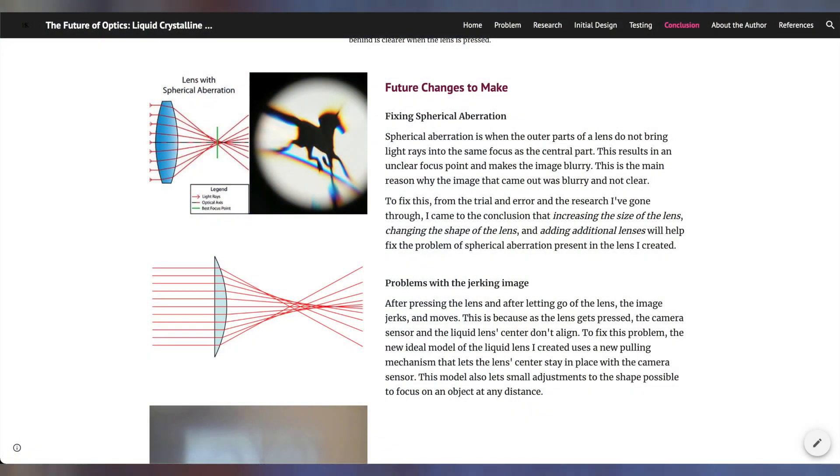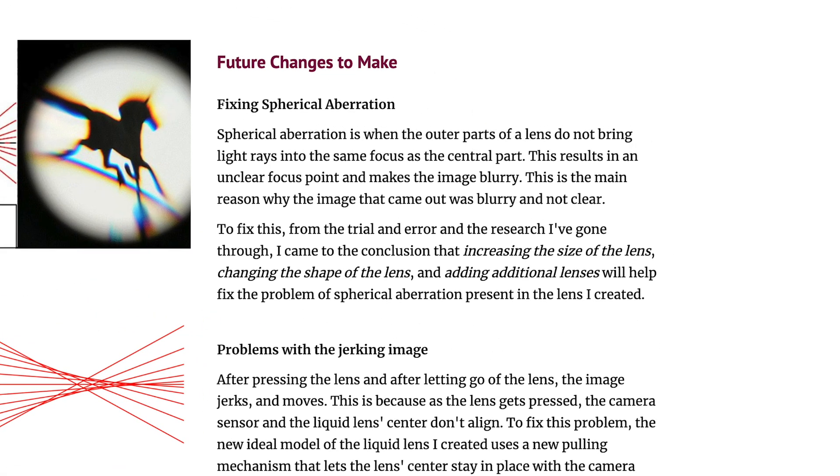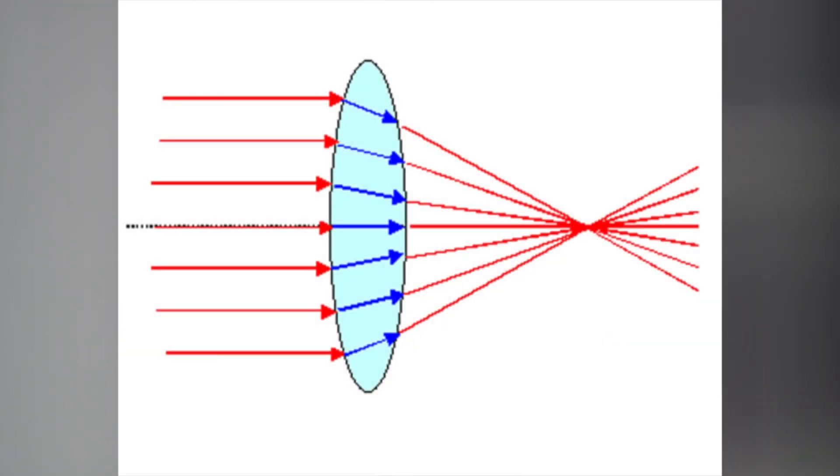The first major problem was that the spherical aberration of this lens is very severe. Spherical aberration is when the outer parts of a lens do not bring light rays into the same focus as the central part. This results in an unclear focus point that makes the image blurry. This is the main reason why the image that came out was blurry and not clear. To fix this, I came up with the conclusion that increasing the size of the lens, changing the shape of the lens, and adding additional lenses will help fix the problem of spherical aberration present in the lens I've created. Changing the shape to a thinner convex oval shape will help decrease the difference of the light rays between the outer part and the central part. Increasing the size of the lens will help make more of the center part and less of the outer part of the light rays hit the sensor, and adding additional lenses will help gather the light rays into a point so that the light doesn't go through the outer part of the lens.